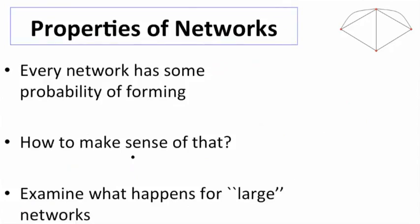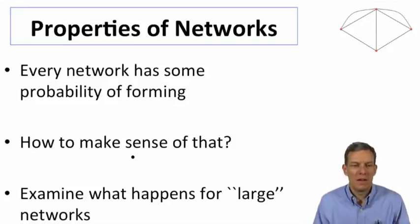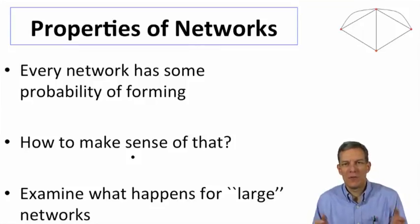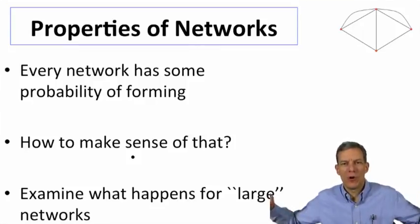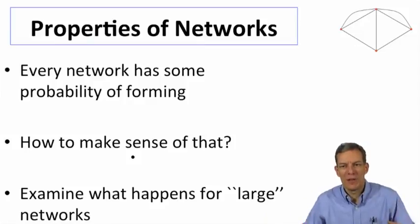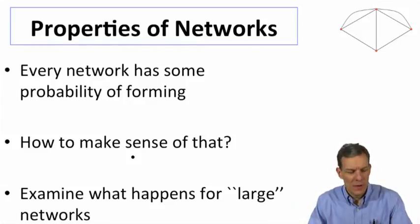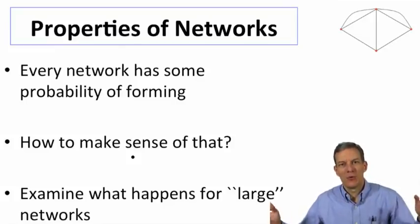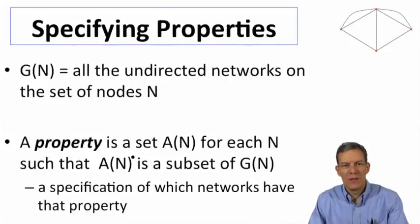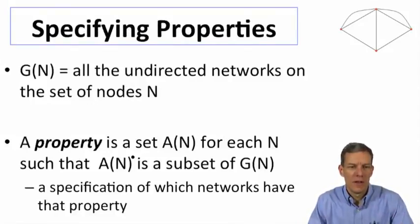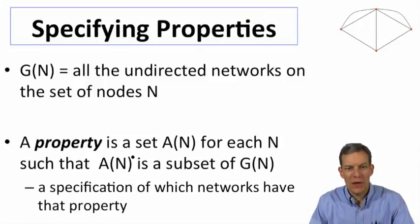So again, when we're dealing with these kinds of networks, part of the challenge is that every network actually has some probability of forming. And so how do you make sense of that? What we do is begin to prove theorems for large networks. So if N is large, then with a probability close to 1, certain kinds of things are going to be true. Now the way in which people begin to specify what might be true or what might not be true is by specifying what are known as properties. So in order to make this precise, let me just bring in a little bit of notation.